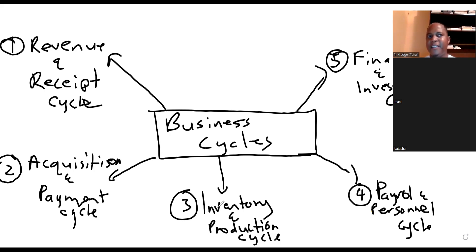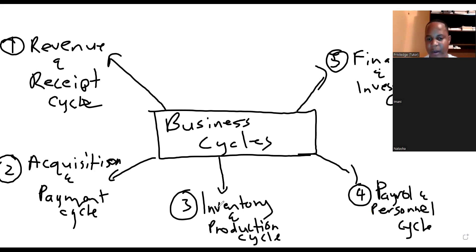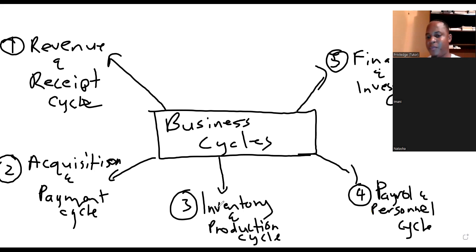With the Inventory and Production Cycle, the core behind it is the intent to produce or manufacture a product which will in turn be sold to the intended user. One key thing you'll discover with inventory and production is that we break inventory into three stages: the raw material stage, the work-in-progress stage, and the finished product or finished goods stage. I'll unveil that in detail when we get to that cycle.